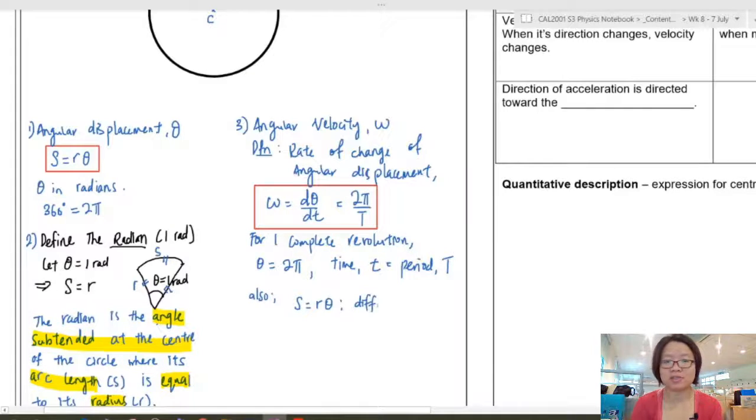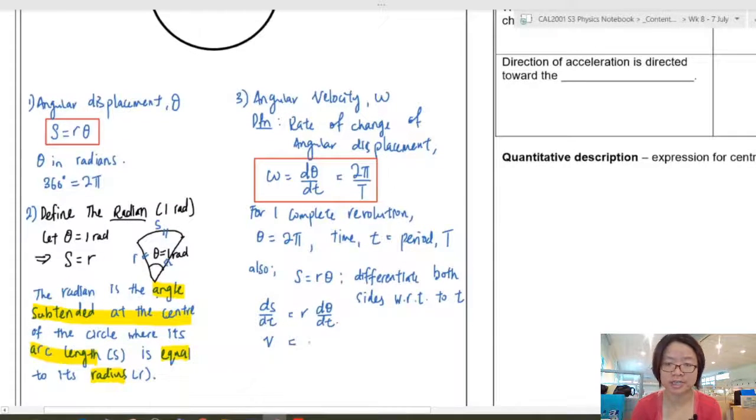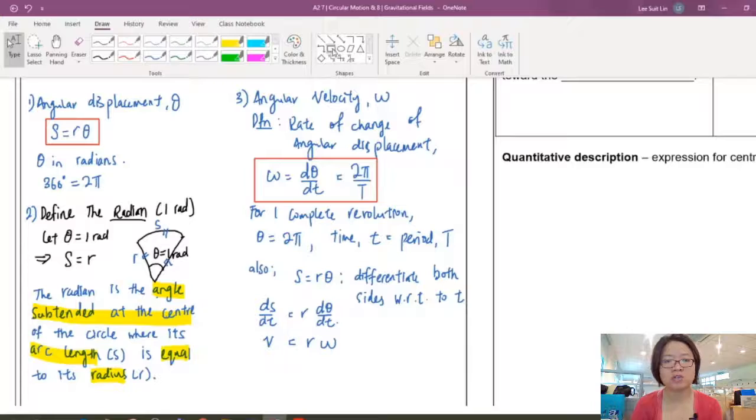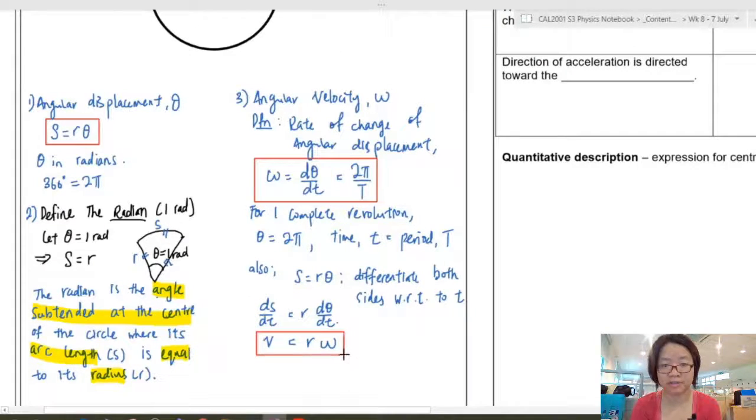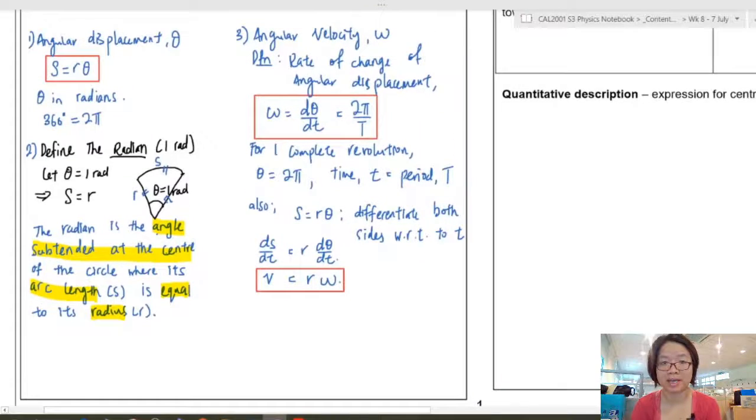All right. So since we know S is equal to R theta, we are going to differentiate both sides with respect to time. So I'm going to put ds dt is R d theta dt. Because R is a constant, I can immediately plug it out. So I will get V is equal to R omega. Because ds dt is V and d theta dt is omega. All right. So depending on what you are looking for, you use different equations.